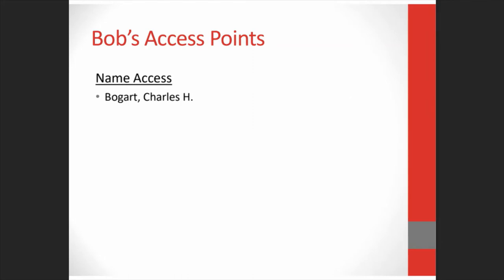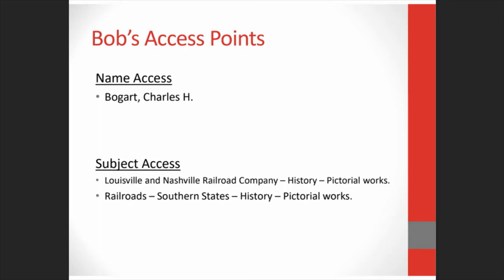Now that we've talked about access and authority control, let's see what Bob's access points would be. The only person named in connection with Bob is the author, whose name is Charles H. Bogart, and this is how his name is found on the title page and the cover of the book. We're going to use that form unless we find it is different in the authority file — it's not, so we're good to go. Now we have two subject headings for Bob. The first is a specific subject heading for the Louisville and Nashville Railroad Company, with a topical subdivision for history and a form subdivision for pictorial works, since this is a book of postcards. We've also included a more general subject heading for railroads with a geographic subdivision for southern states, since this is about more than just railroads in Kentucky.